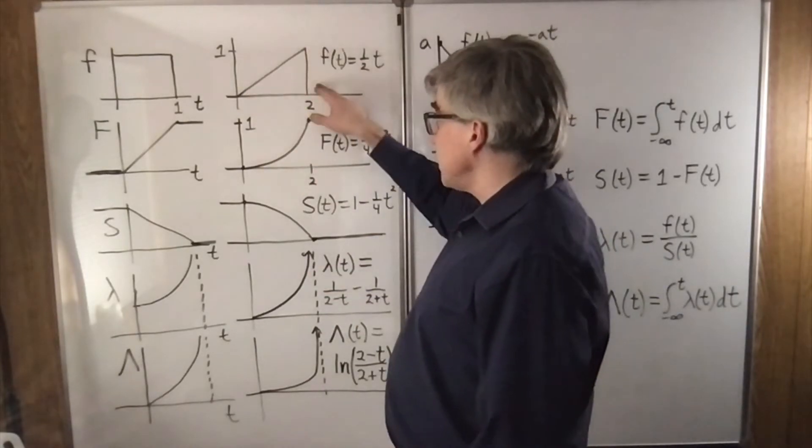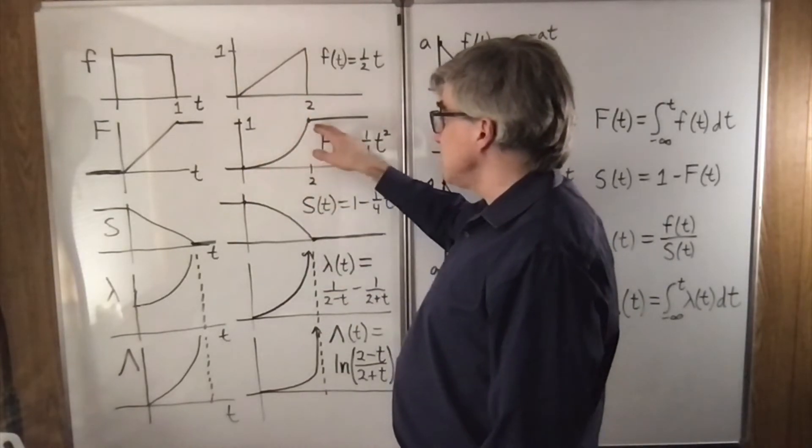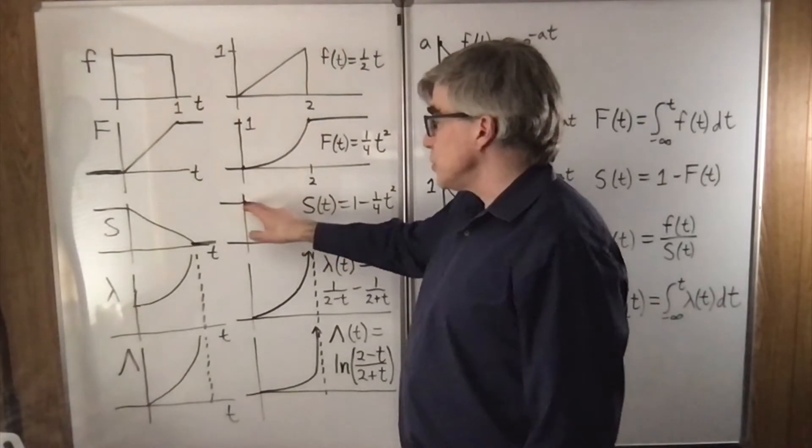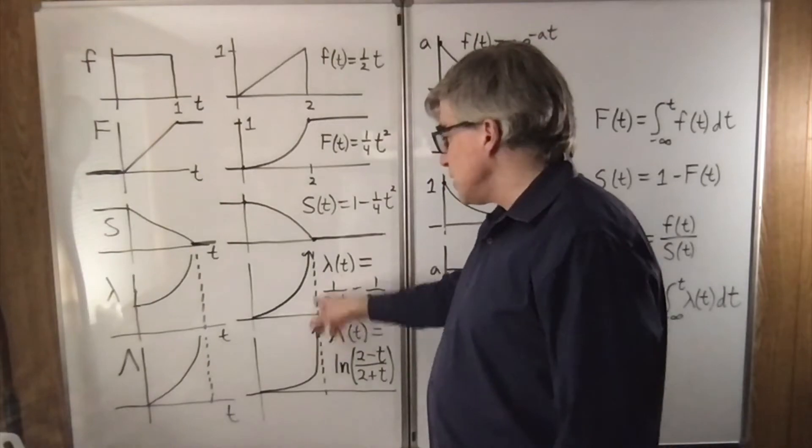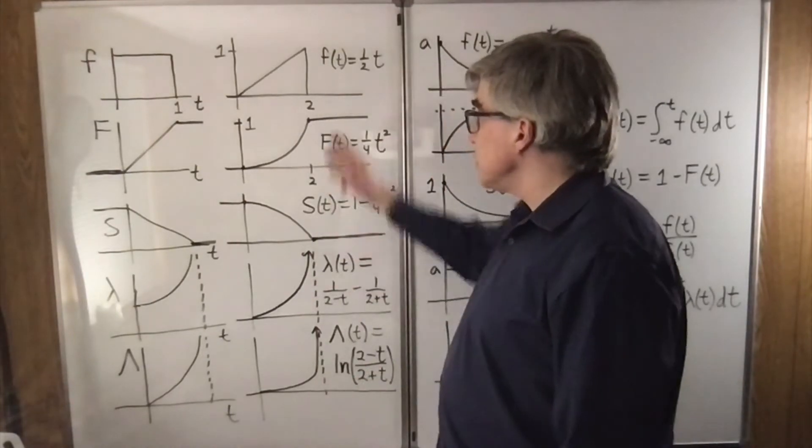Meanwhile, a triangular density has a quadratic CDF. The survival function is a quadratic going downward. The lambda again has a vertical spike at the end of the distribution.